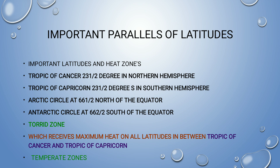The Arctic Circle is at 66.5 degrees north of the equator. The Antarctic Circle is at 66.5 degrees south of the equator. Please keep these lines in mind as they are very frequently asked in exams.